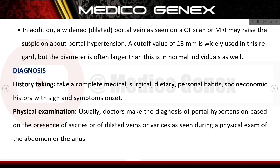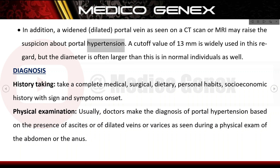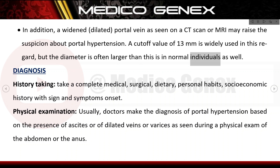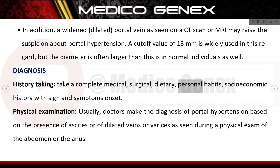Additional signs and symptoms include anorectal varices, esophageal and gastric varices, and swollen veins on the anterior abdominal wall, sometimes referred to as caput medusae. A widened or dilated portal vein as seen on CT scan or MRI may also raise suspicion of portal hypertension; a cut-off value of 13 millimeters is widely used.